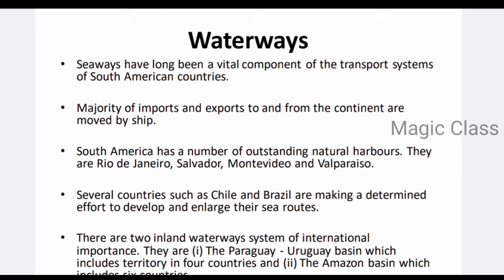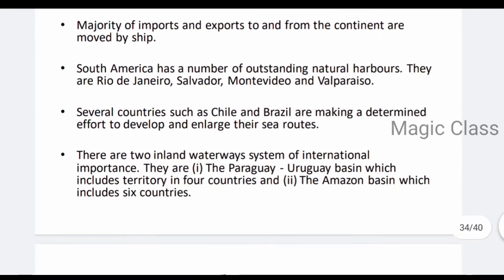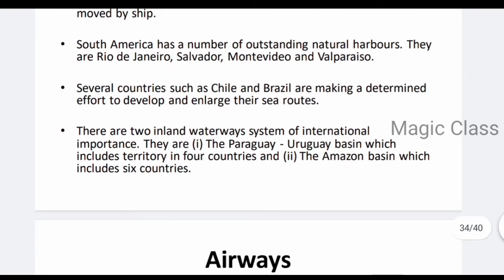The majority of imports and exports are handled by sea. South America has very natural harbors, for example Rio de Janeiro, Salvador, Montevideo, and Valparaiso. Countries such as Chile and Brazil are making determined efforts to develop and enlarge their sea ports. There are also two major inland waterway systems: the Paraguay-Uruguay Basin and the Amazon Basin.